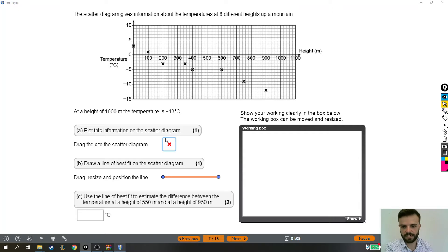Now, we are told that at 1,000 meters, which is here, the temperature is minus 13. So we plot this down to minus 10, minus 11, minus 12, minus 13. You want to be really precise, really accurate, put it right where the lines cross because it's exactly 13. That looks good to me.